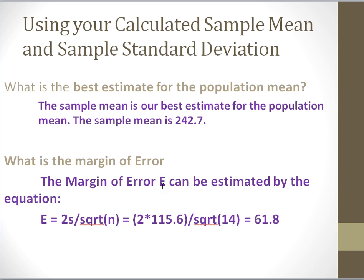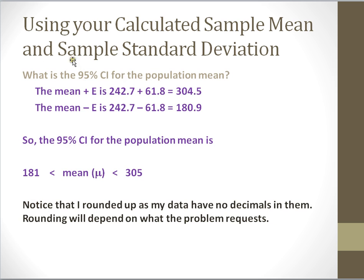So if we were building a 95% confidence interval about our mean, we would add and subtract our margin of error from our mean, and that would be a confidence interval around the population mean. To calculate the 95% confidence interval for the population mean, we take our sample mean and add on and also subtract to get the upper and lower bounds. We add on our margin of error of 61.8 and also subtract it, giving us a lower bound and upper bound. That means our population mean mu, 95% of the time, should be between 181 and 305. Note that I did round these numbers, and the rounding is determined by the application or what is requested in the assignment.